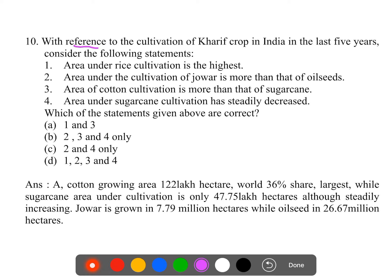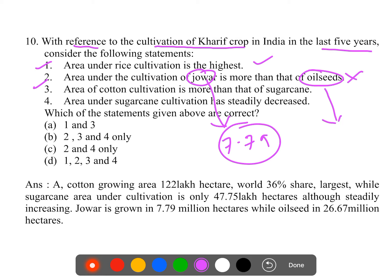Question 10: With reference to cultivation of Kharif crops in India over the last five years. Statement one - area under rice cultivation is the highest - correct; the top two crops in India are rice and wheat. Statement two - area under jowar cultivation is more than that of oilseeds - incorrect; jowar's production area during the Kharif season is only 7.79 million hectares, while oilseeds are around 26.67 million hectares, so jowar is less, not more.